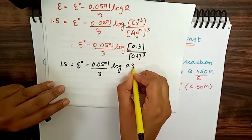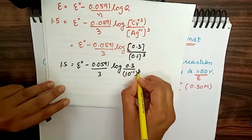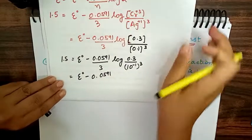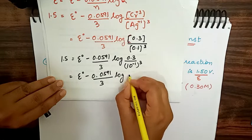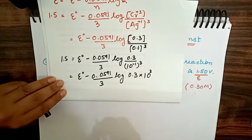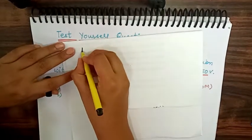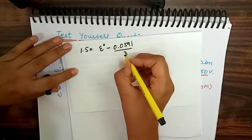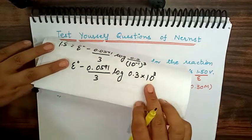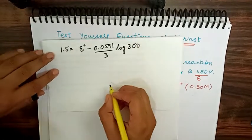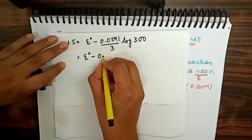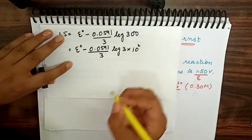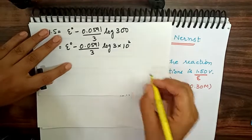Substituting into the Nernst equation: E = E° − (0.0591/3) · log(0.3 / 0.1³). We can write 0.1 as 10⁻¹, so 0.1³ = 10⁻³. Bringing the power up, the expression becomes: 1.5 = E° − (0.0591/3) · log(300).